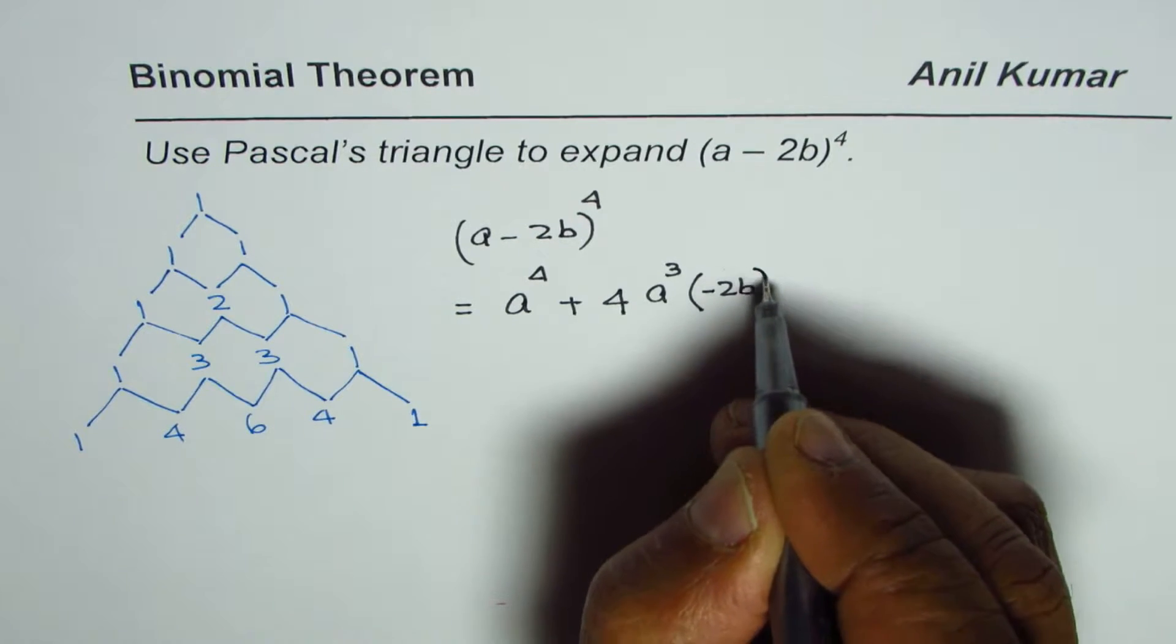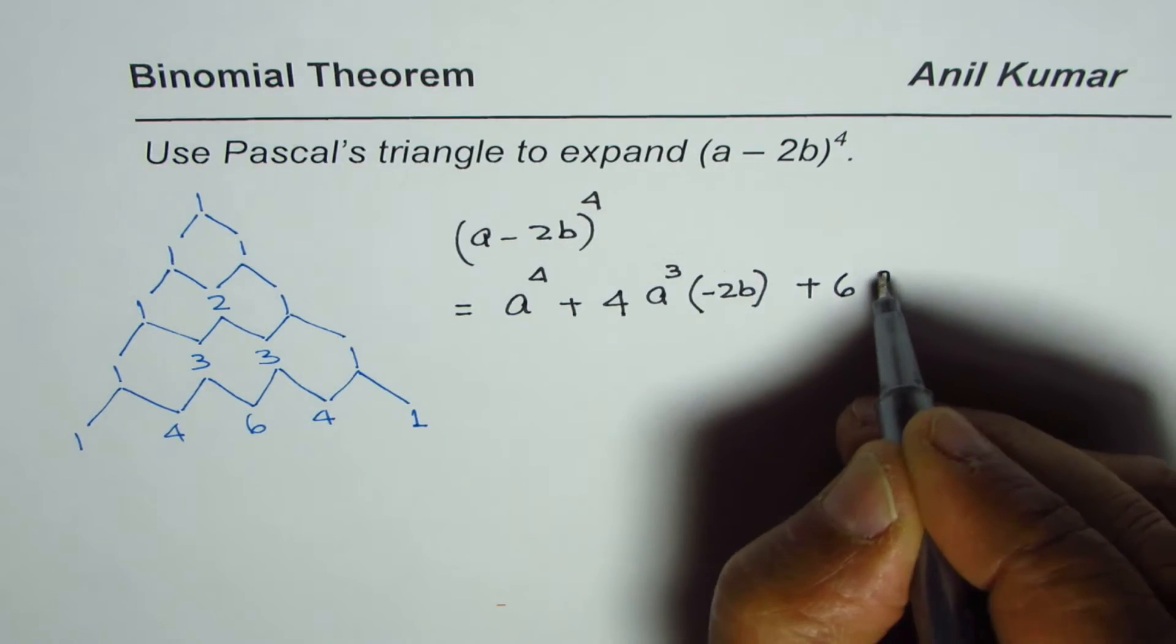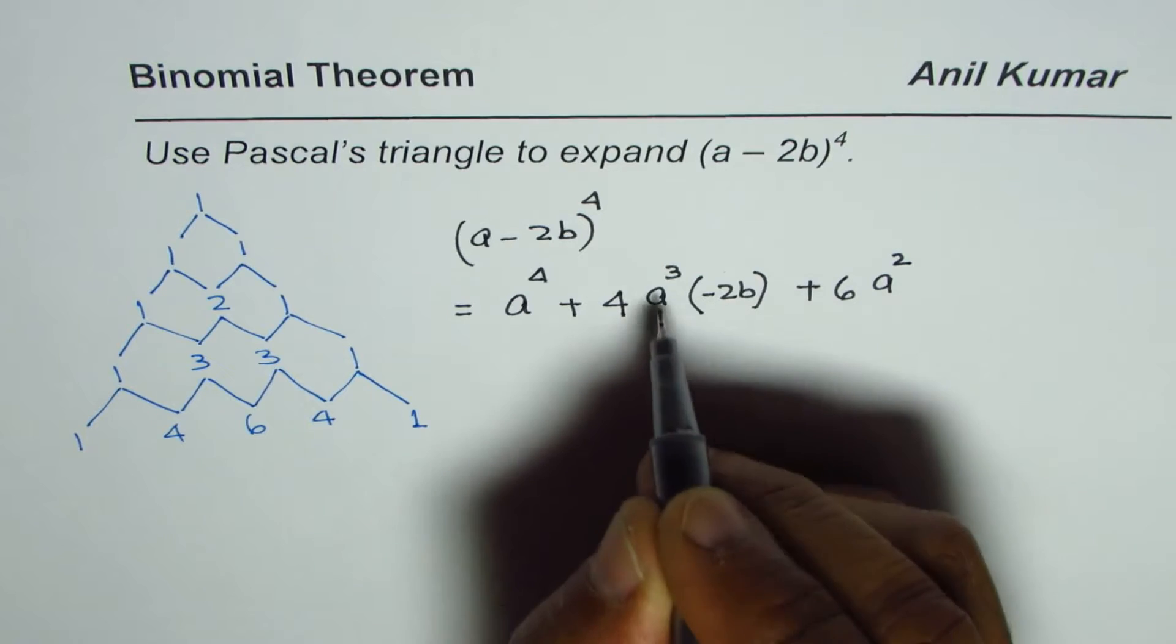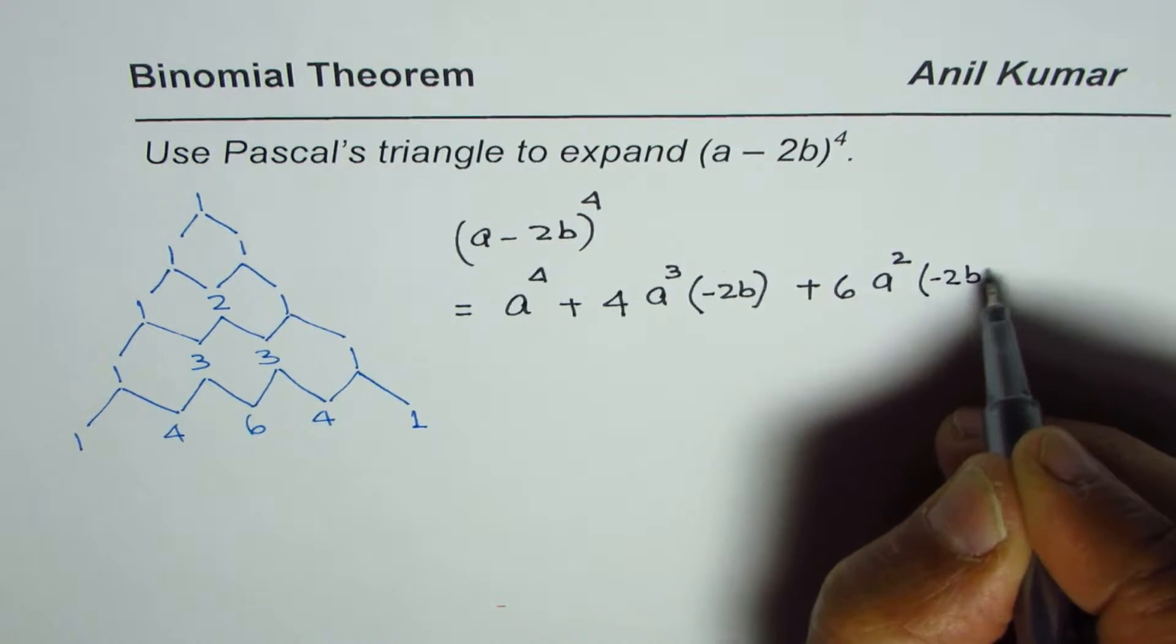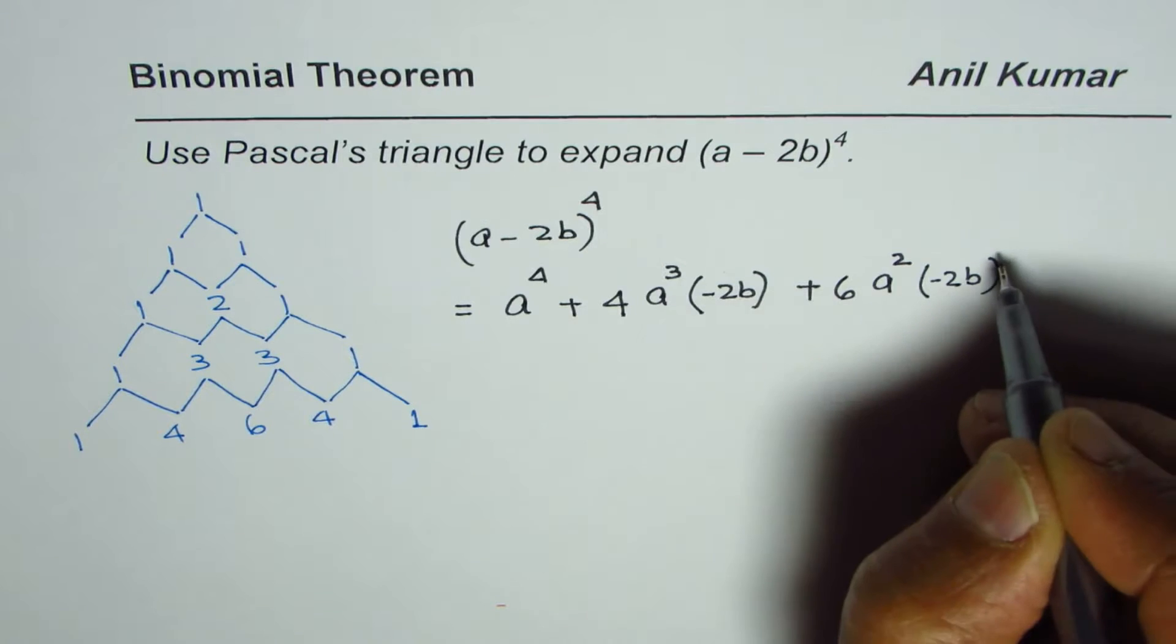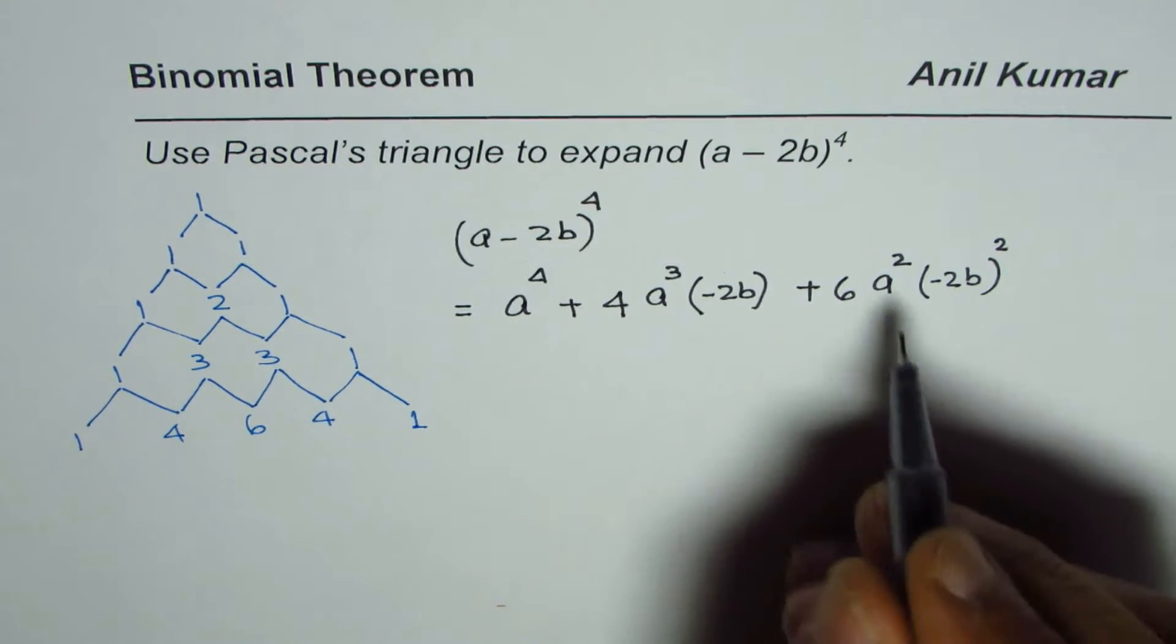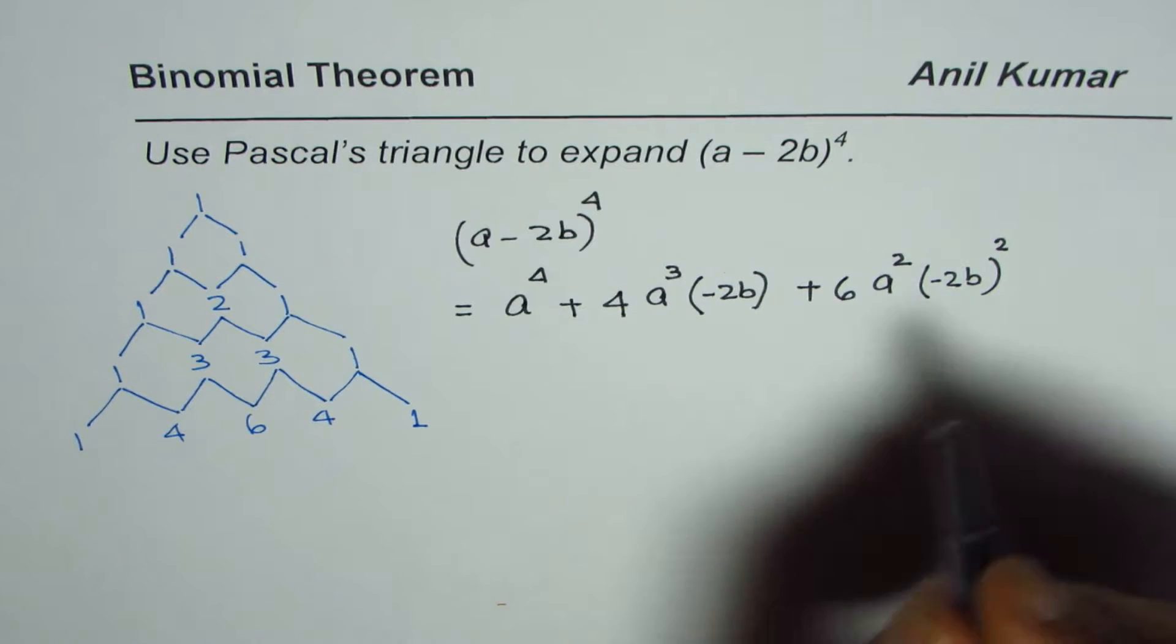time, so it becomes a^2. For minus 2b, we increase the power by 1, making it (−2b)^2. We have 1, 2, 3 terms. To the power of 4 means 5 terms in all. The next coefficient is 4 again, a's power should be 1 less, so